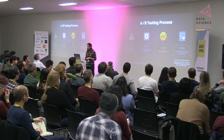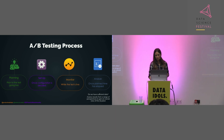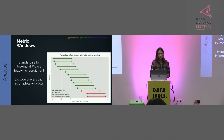The last stage is analysis. Once the planned time has elapsed, we check whether we have sufficient data, then access the results from different perspectives. We do dynamic recruitment, which means on a given date players will have different durations within the test. So if we're doing analysis on day five, some players entered at the very beginning and have five days of data, while players who entered at the very end might have just one day. The way we account for this is by standardizing: we look at X days following recruitment, which we call metric windows.